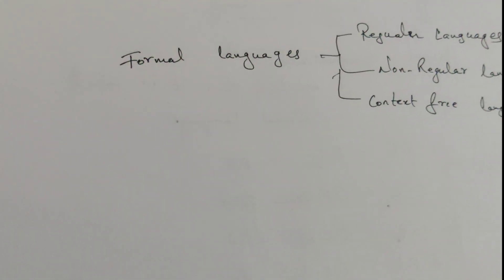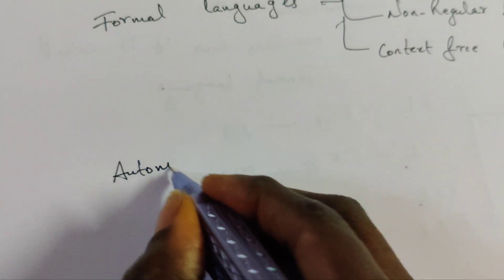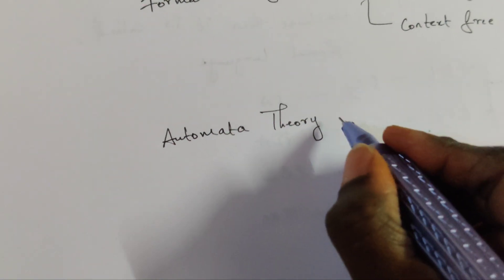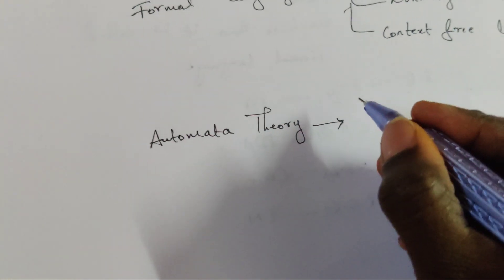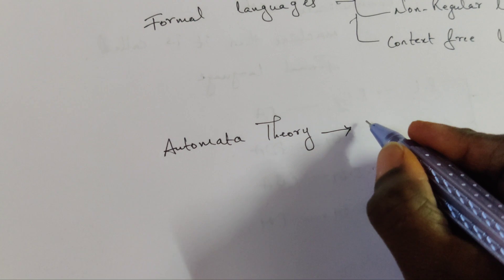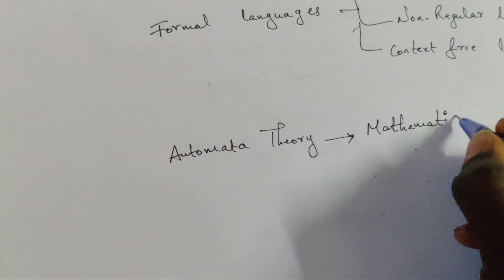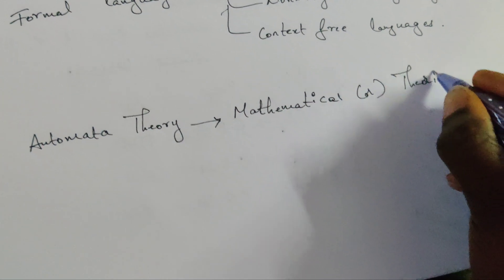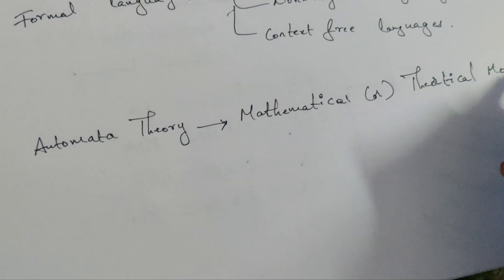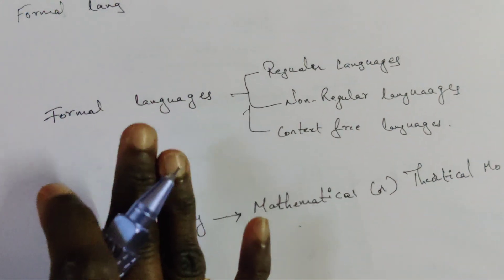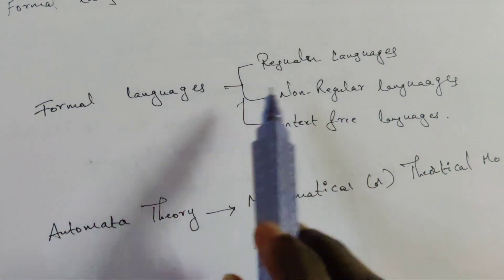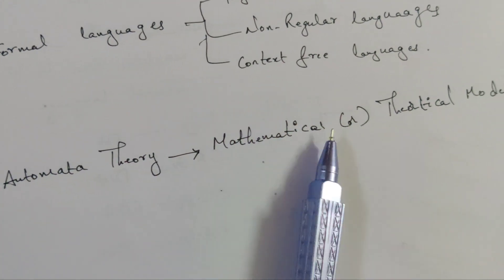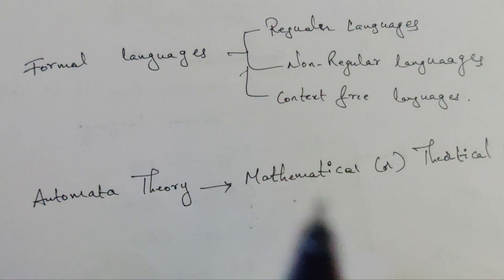Now, what is automata theory? Automata theory specifies the study of various mathematical and theoretical models. Formal languages include regular languages, non-regular languages, and context-free languages. This is the introduction to FLAT.